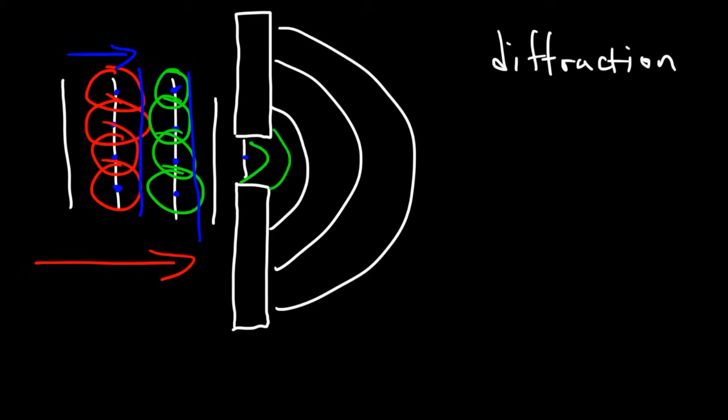And so forth, this pattern will continue to propagate forward. And so Huygens Principle is a good way to explain why diffraction occurs when you have a plane wave entering an opening.